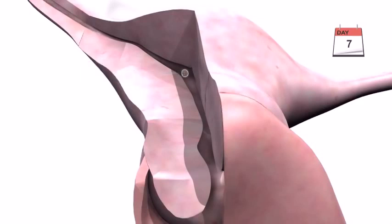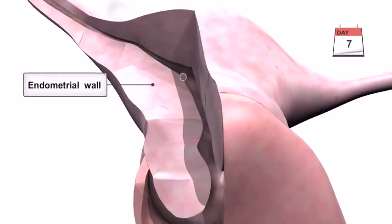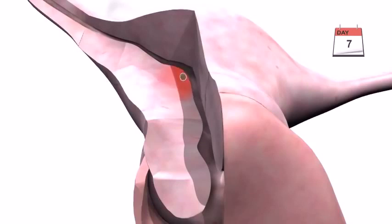Initially, the blastocyst attaches loosely to the endometrial wall, but this attachment becomes stronger as the blastocyst burrows into the endometrium, and the endometrium becomes increasingly vascularized.